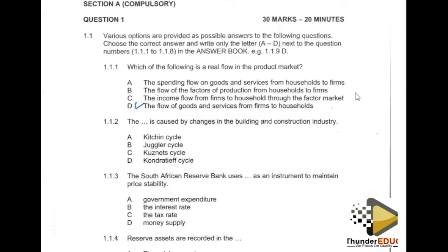The appropriate answer for 1.1.2 is C. Remember, the types of business cycles normally depend on the number of years that business or economic activities fluctuate. Business cycles refer to fluctuations of economic activities, and we check how long those activities fluctuate. Our appropriate answer is C.